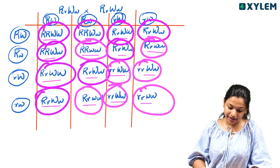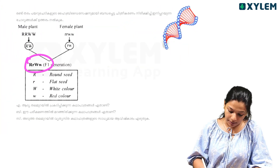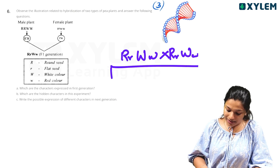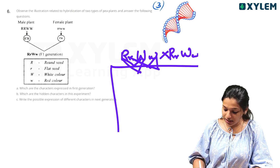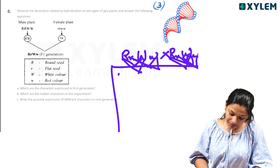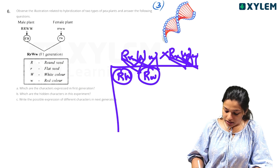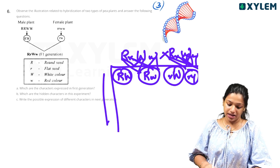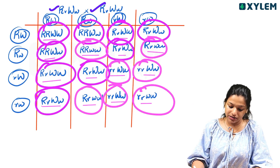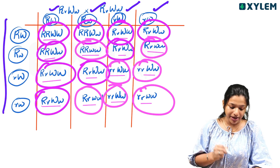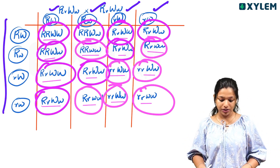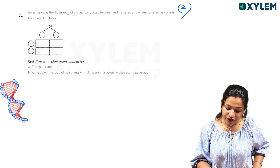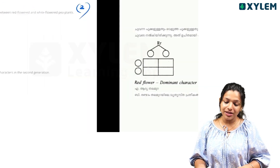We have capital R, small r, capital W, capital W. We are doing a self-cross. If we look at this, we are simply going to cross it. We have capital R, capital W crossed with capital R, small w; small r, capital W; small r, small w. This is the cross. Using the same cross in the next generation.